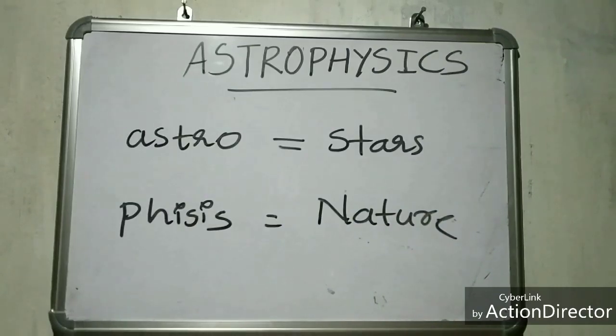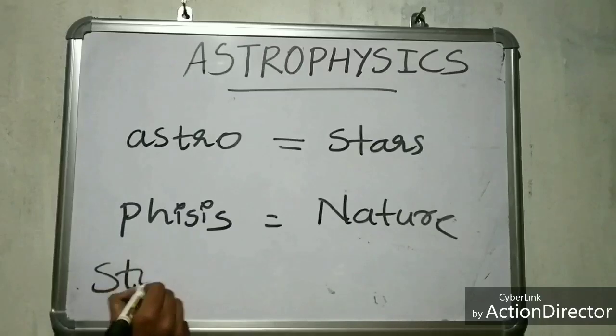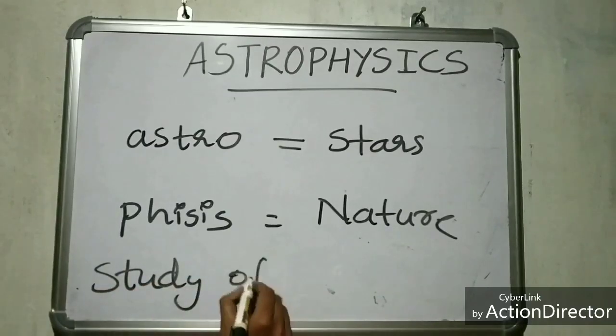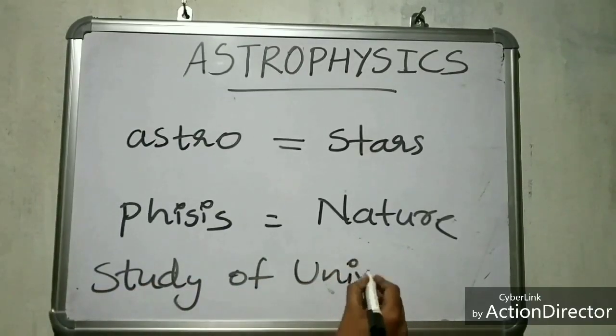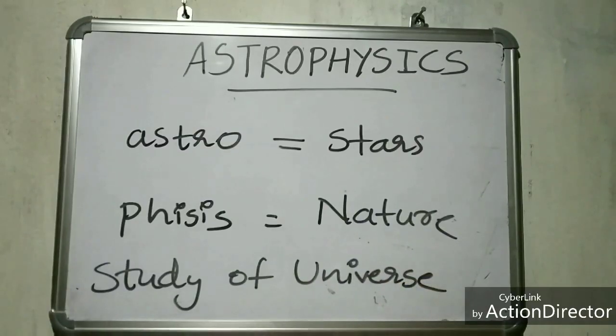Thus astrophysics can be defined as a branch of astronomy which is concerned with the study of universe using the laws of physics. Universe including stars, galaxies and planets.